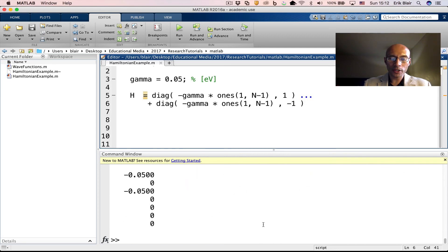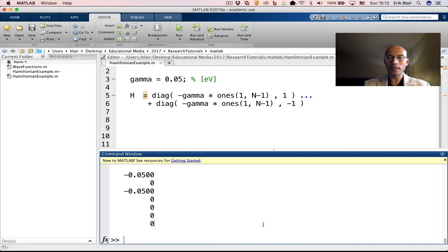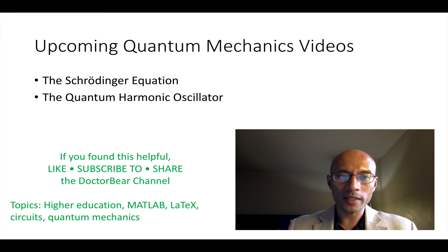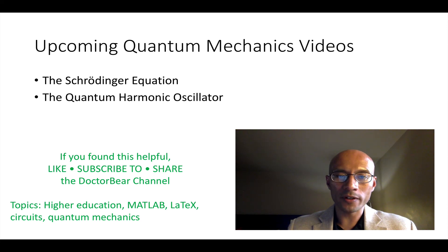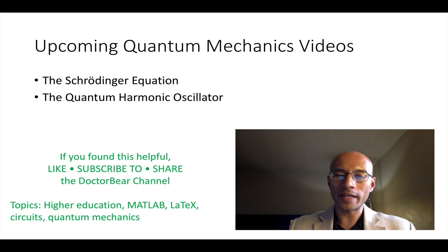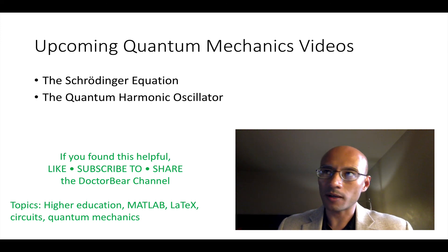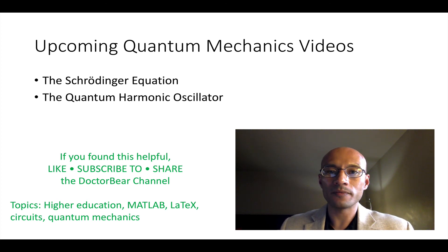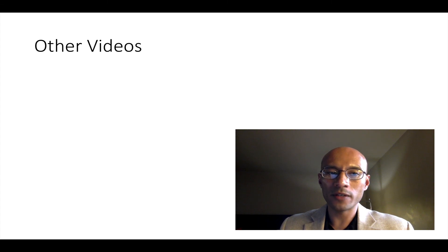In another video, I'm going to show you how we can use the Hamiltonian to calculate the time evolution and the stationary states — all very important things in quantum mechanics. So we introduced the concept of an operator and the very important Hamiltonian operator by way of the Schrödinger equation. Next time, we'll talk more about the Schrödinger equation and how we can apply the Hamiltonian that we showed you how to create in this video. As always, if you found this video helpful, please like it, share it, share the channel, and look out for upcoming videos. Here are some links to other videos I've created. Thanks for watching, and have a great day.